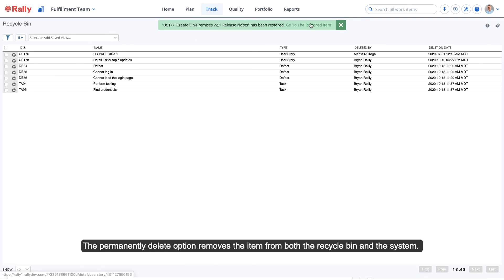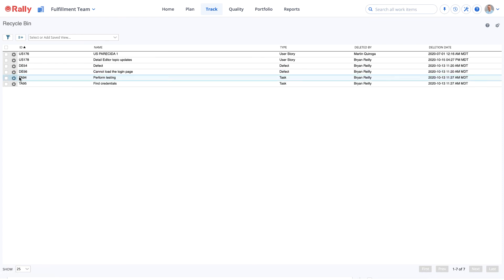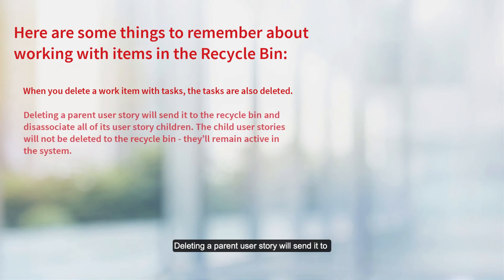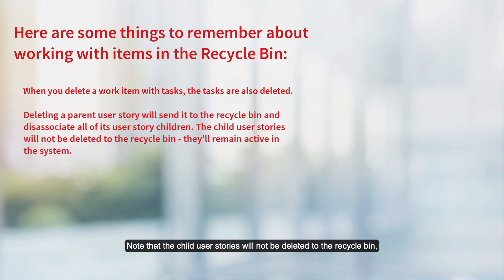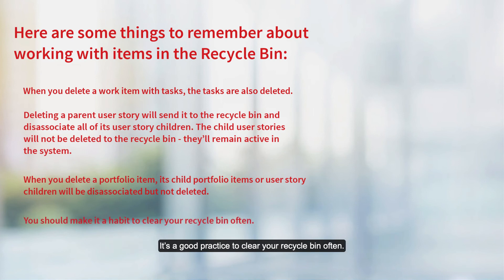The permanently delete option removes the item from both the recycle bin and the system. Be careful, there's no undo for this. There are a few rules to remember when deleting a hierarchy or group of associated work items. When you delete a work item with tasks, the tasks are also deleted. Deleting a parent user story will send it to the recycle bin and disassociate all of its user story children. Note that the child user stories will not be deleted to the recycle bin — they'll remain active in the system. The same thing happens when you delete a portfolio item: its child portfolio items or user story children will be disassociated but not deleted. It's a good practice to clear your recycle bin often.